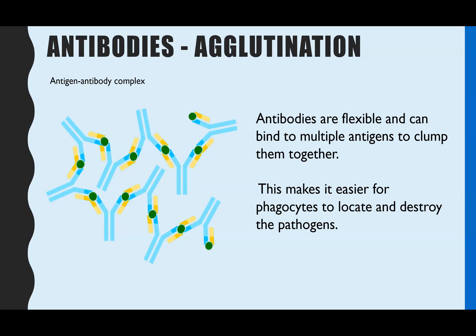Antibodies help destroy pathogens through a process called agglutination. Antibodies bind to antigens to create antigen-antibody complexes. Because antibodies are slightly flexible, they can twist and flex to attach to another antigen. The result is multiple antibodies attaching to multiple antigens and clumping together — that is agglutination. This clumping makes it easier for phagocytes to locate the pathogens and far more efficient at engulfing them.